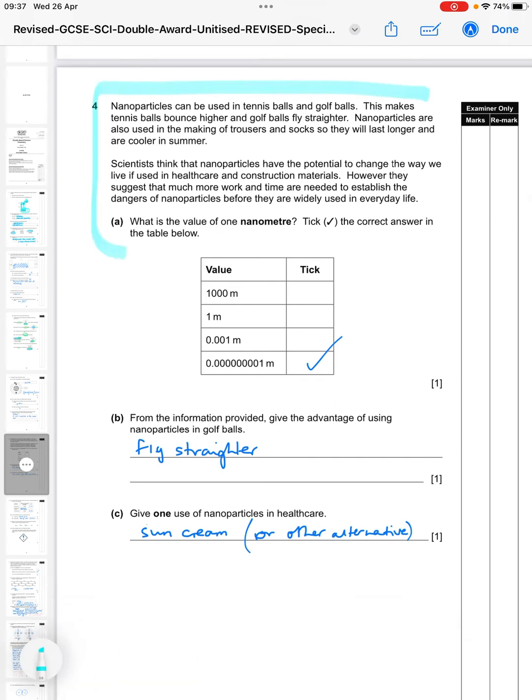Number four is about nanoparticles. We have a big paragraph to read. Now when you have something like this, it's tempting just to skip to the first question and ignore the whole big spiel. But you really need to read everything on the paper. The examiners don't put anything there without a purpose. So nanoparticles can be used in tennis balls and golf balls - this makes tennis balls bounce higher and golf balls fly straighter. Nanoparticles are also used in making trousers and socks so they last longer and are cooler in summer. Scientists think that nanoparticles have the potential to change the way we live if used in healthcare and construction materials.